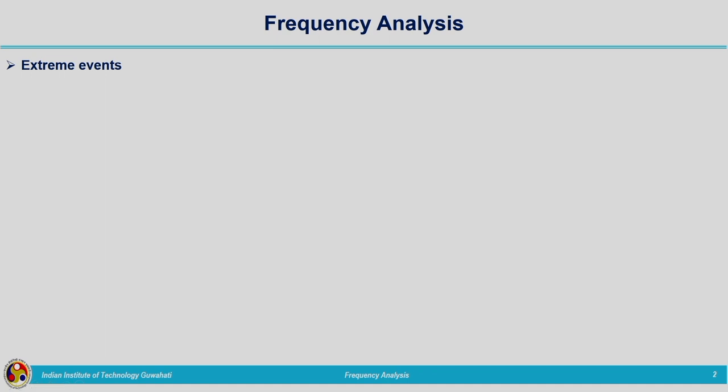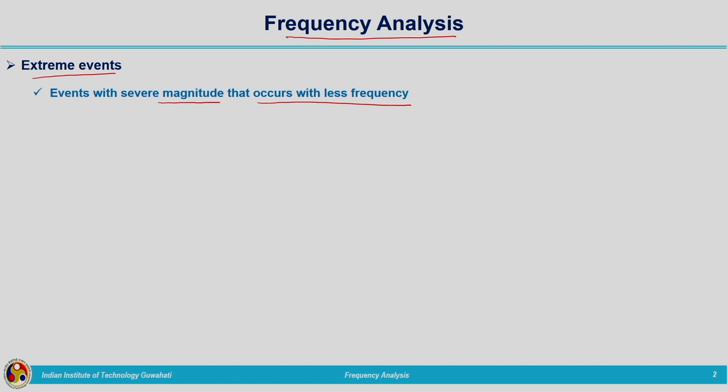For understanding the method of frequency analysis, let us start with extreme events. Extreme events are events with severe magnitude that occur with less frequency. Consider the case of rainfall — we experience rainfall every year, but not all rainfall events create floods. Sometimes we have excess rainfall, sometimes scarcity of rainfall. These two situations lead to two different extreme events: floods and droughts. Severe rainfall leads to floods, and scarcity of rainfall leads to droughts.